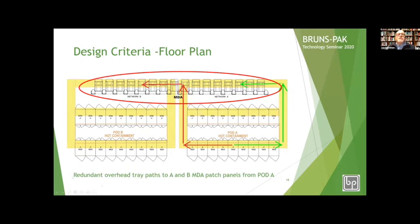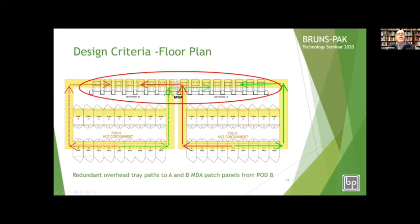The tray paths are redundant. From Pod A and Pod B, every rack has a redundant tray path to the MDA. For example, an IT cabinet goes out one way to reach Network A, and down another path to Network B — cables completely in redundant overhead paths. The matching rack in Pod B comes down a different path into the MDA. Completely redundant cable paths — 2,600 square feet, 36 IT racks.